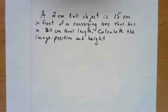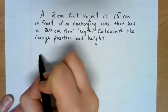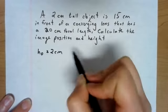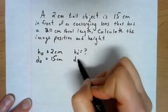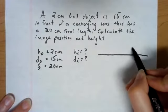So we are going to do an example problem. So this one is a two centimeter tall object is 15 centimeters in front of a converging lens that has a 20 centimeter focal length. Calculate the image position and height. Now, I did not have to tell you that it was a converging lens simply because that focal length is a positive 20 centimeters. That should have been your note to say, hey, this is going to be a converging lens. So good physics problem solving strategy. We start with our knowns and our unknowns.